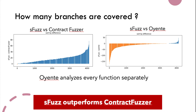The second research question: how many branches are covered by Sfuzz? On the left figure, we compare Sfuzz and ContractFuzzer — the blue bar indicates that Sfuzz outperforms ContractFuzzer. On the right figure, Sfuzz cannot do better than Oyente. The reason is that Oyente analyzes every function separately; therefore, state variables can take arbitrary values without considering their initial values, which is not correct in a real smart contract.